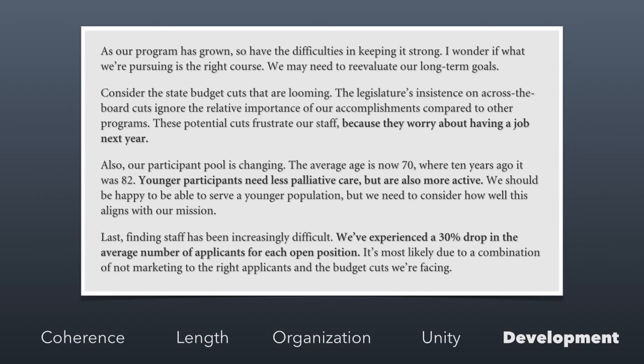Here's the final updated version. You'll notice that we added a reason why the potential cuts frustrate our staff, which makes that paragraph stronger. We added an explanation as to why the change in average age of the participant pool matters. And then finally, in the last paragraph, we gave some statistics to help shore up the idea — we added evidence to support why finding staff is increasingly difficult. These are all development steps that make these paragraphs stronger. So this is the CLOUD approach — every paragraph should adhere to the CLOUD acronym to make sure it communicates effectively.